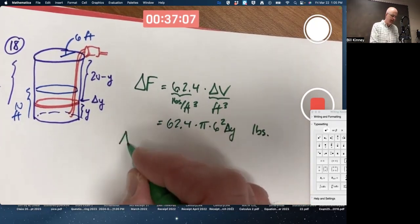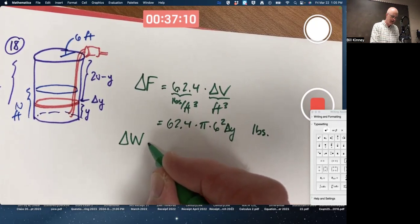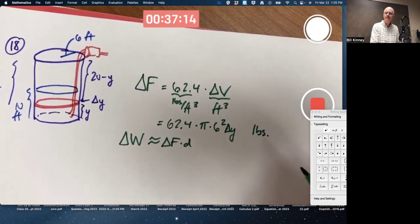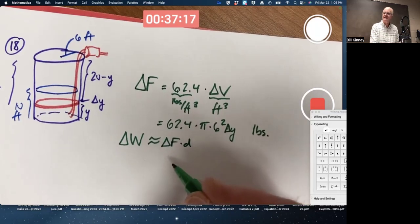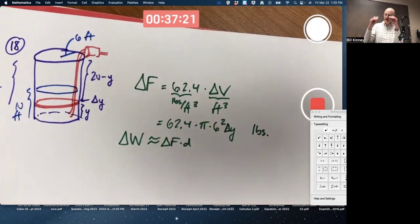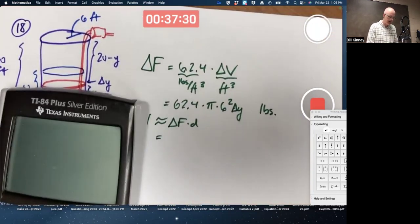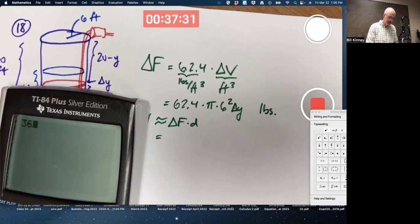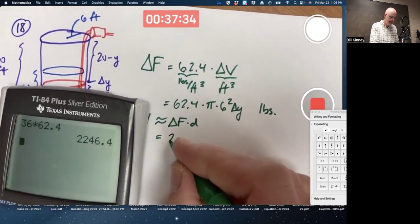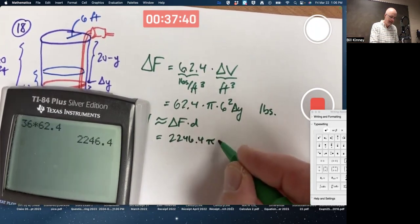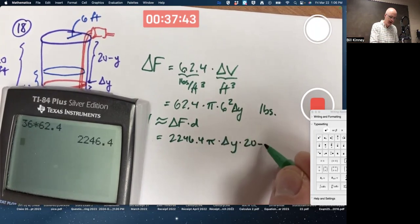So, the small amount of work is approximately delta F times the distance. It's an approximation because the distance is not constant. It's ever so slightly different depending on whether you're on the top of the slice or the bottom of the slice. So, this is an approximation. Let's use the calculator now. 6 squared is 36 times 62.4, 2,246.4 pi times delta y times 20 minus y.